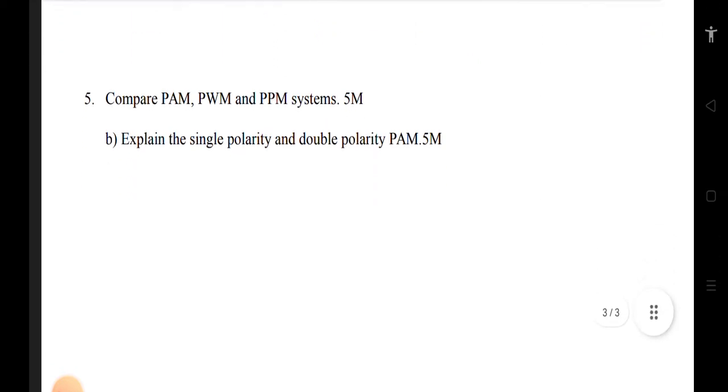The last chapter: pulse amplitude modulation. What is generation? Time-division multiplexing, merits and demerits of time-division multiplexing. Continuous wave and pulse modulation techniques. Transmission bandwidth of FM short notes. Compare PAM, PWM, PPM. Explain the single polarity and double polarity of FM.